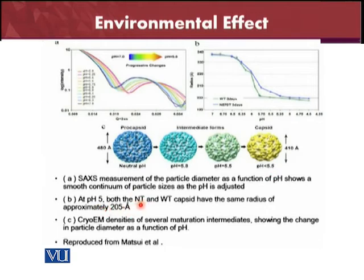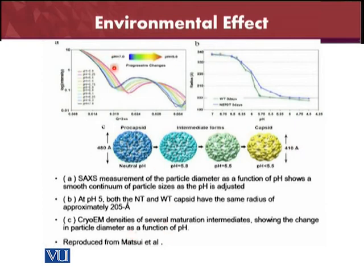At pH 5, both the NT and WT capsid showed the same radius of approximately 2.5 Angstroms. Cryo-EM densities of several maturation intermediates show the change in particle diameter. As you can see, the diameter is progressively reduced. A similar picture is shown from the graphical point of view.